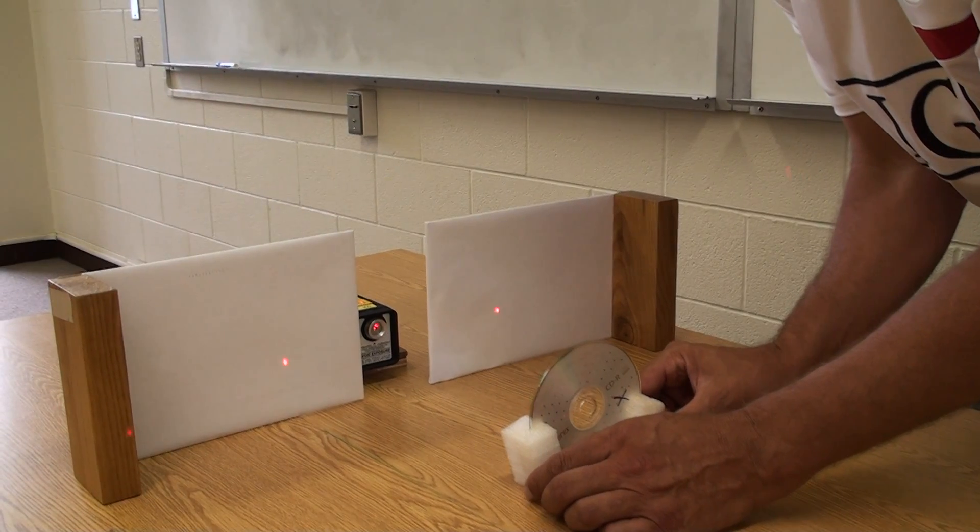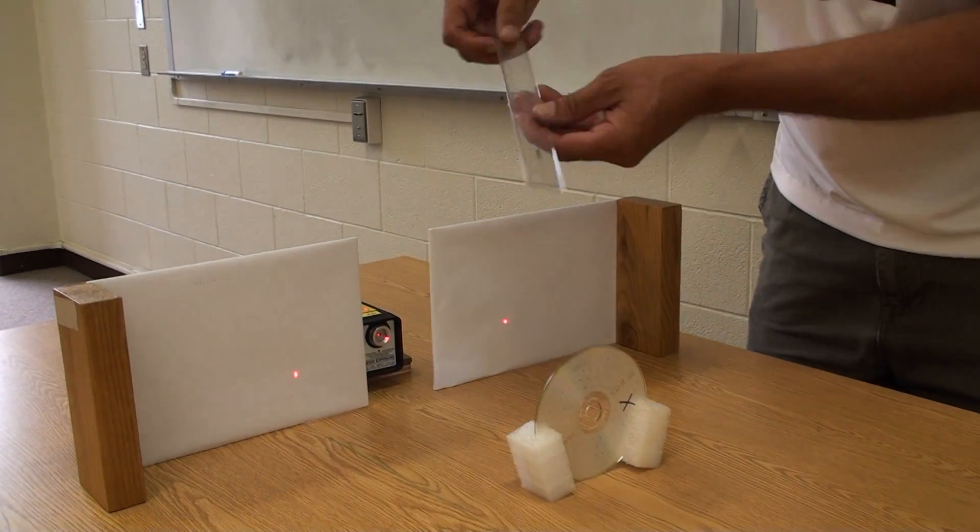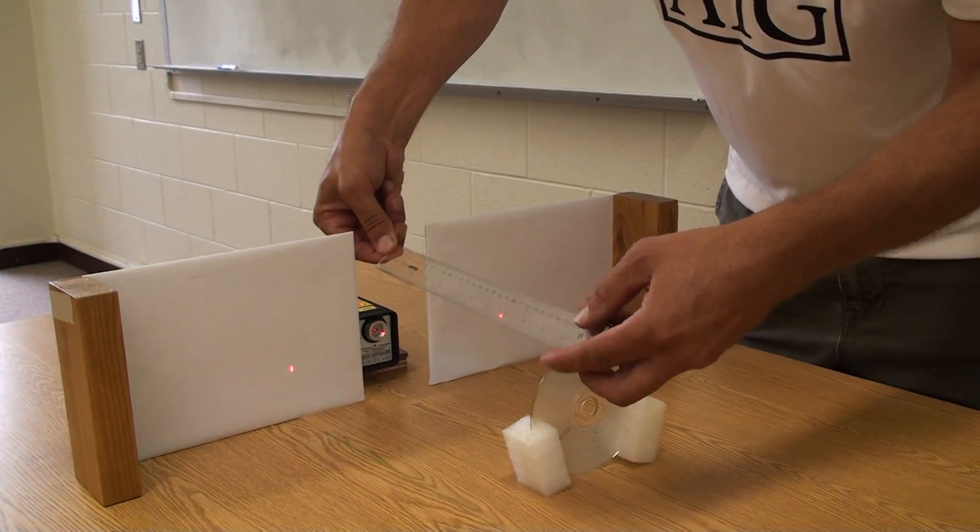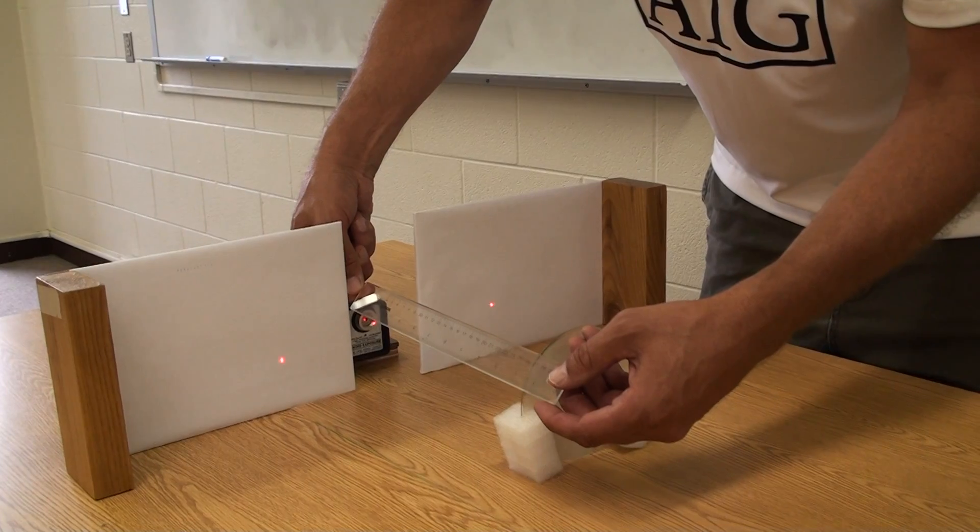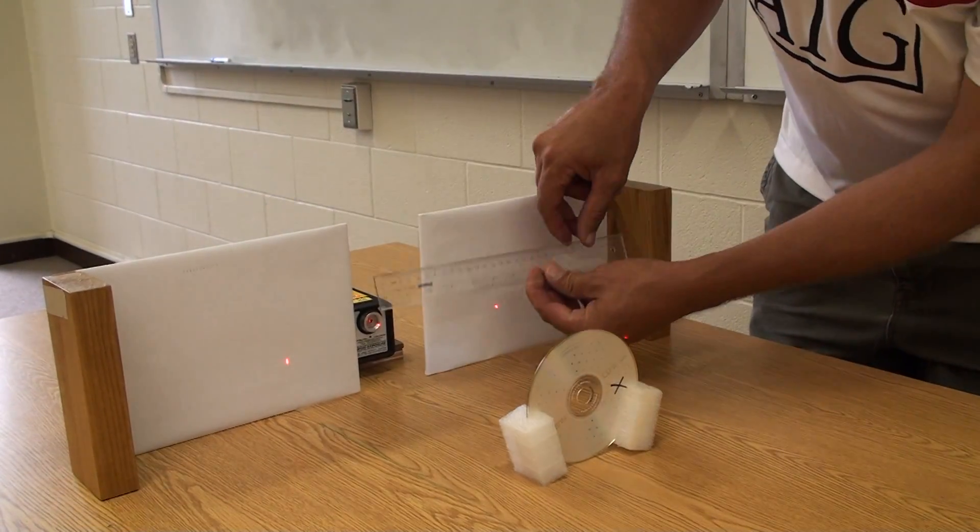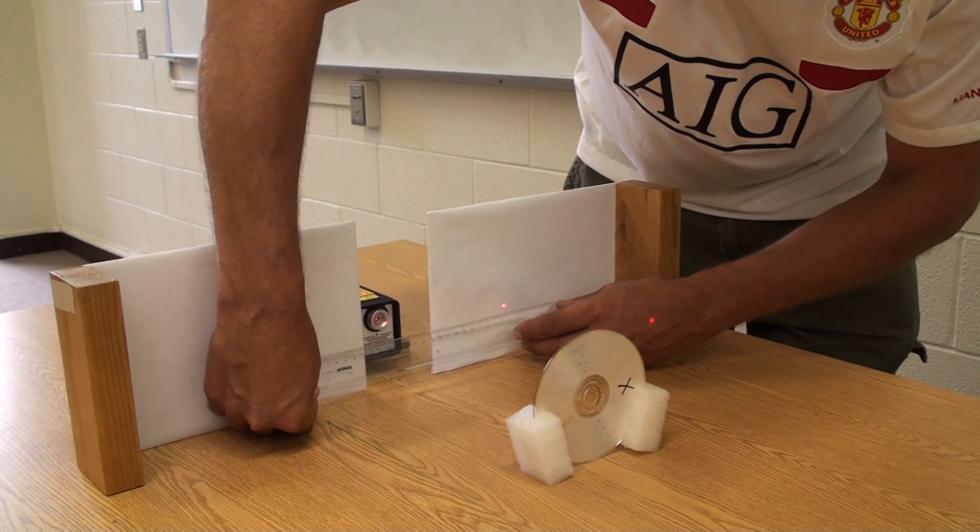The bright spots on either side are the first-order maxima. Measure the distance L from the CD to the screen, and measure the distance between the two wide spots. Divide this distance by two to get the value of y. Use the wavelength L and y to get the groove spacing on the CD.